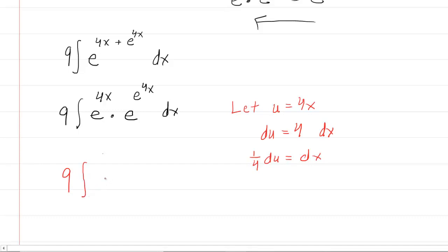We'll have 9 times the integral of e raised to the u times e raised to the e raised to the u. Yes, that is confusing, frankly. And then that's multiplied by dx. But remember, dx is actually going to be 1 fourth du.